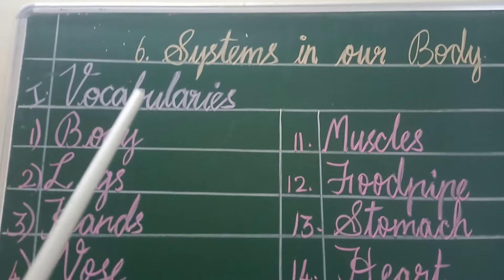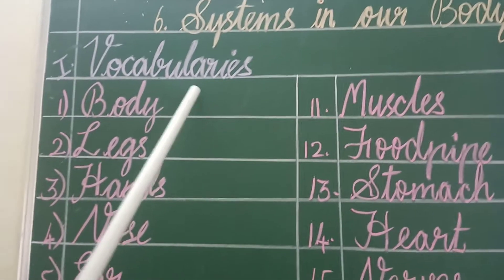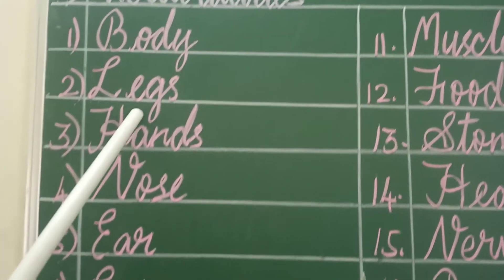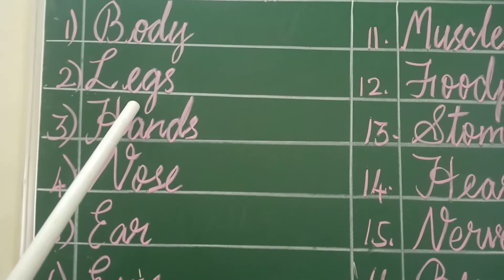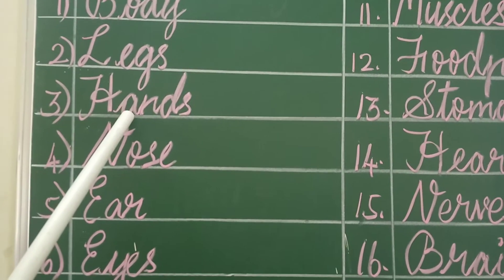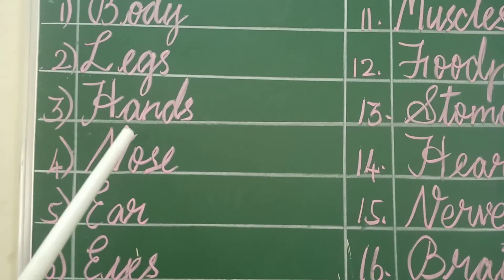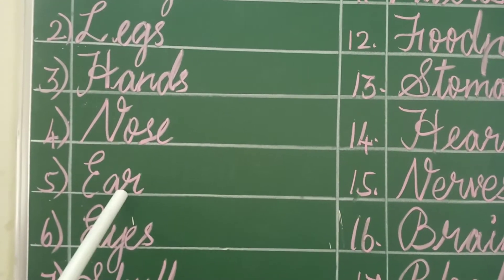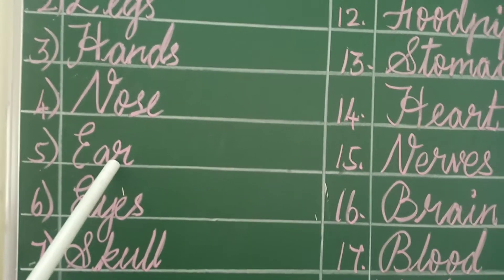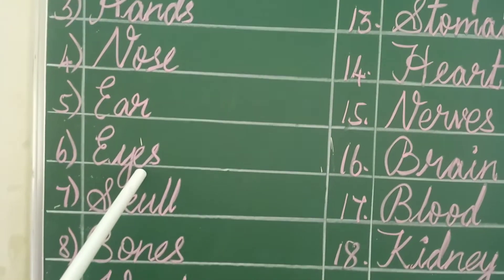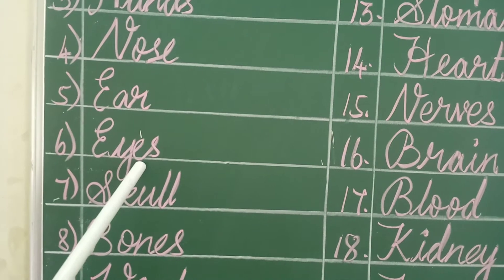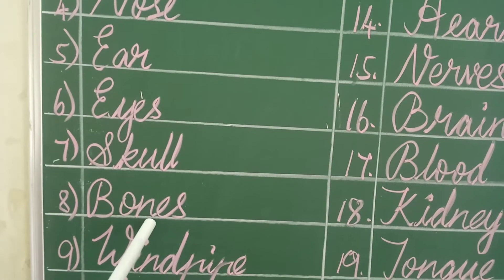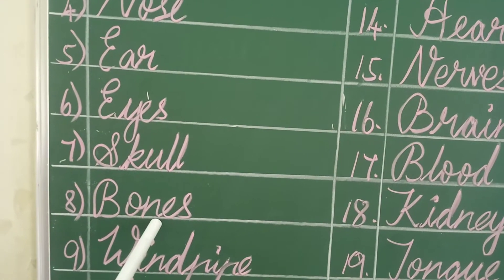First let's see about vocabulary and its meanings. Body — udal. Legs — kaalgal. Hands — kaikal. Nose — mookku. Ear — kaadu. Eyes — kaungal. Skull — mandai odu. Bones — elumbukal.